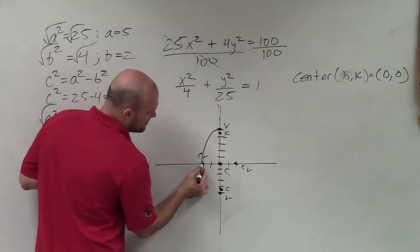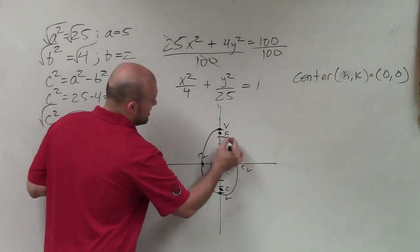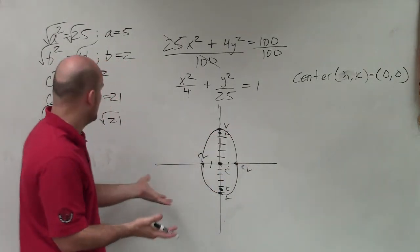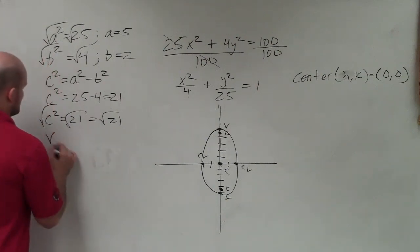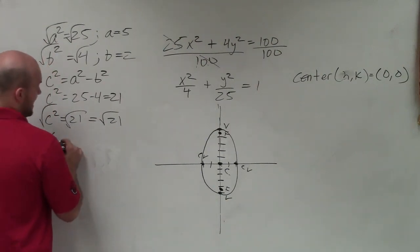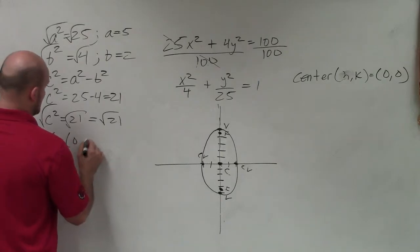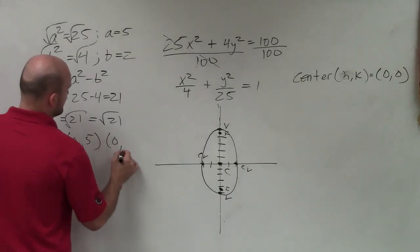Now, to graph my ellipse, I'm just going to connect my vertices and my co-vertices. So there you go, ladies and gentlemen. I guess we can go ahead and write down what the vertices are. So my vertices are now going to be at my point 0, 5 and 0, negative 5.